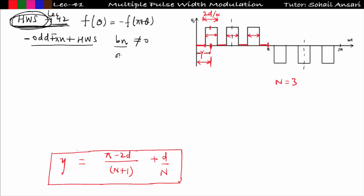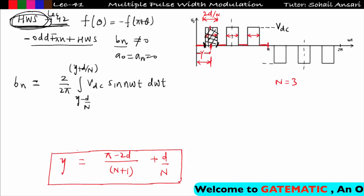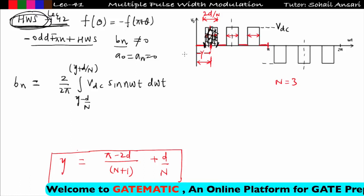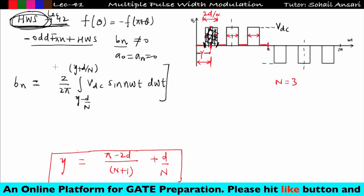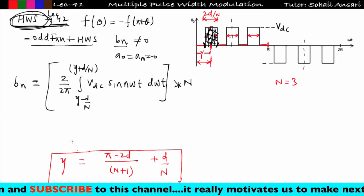This waveform is also an odd function. Odd function plus half-wave symmetry means only bn coefficients exist in the Fourier series; a0 and an equal zero. The value of bn is given by (2/2π) integrated with the peak voltage Vdc times sin(nωt) dωt. For one pulse, the limits are from gamma − d/n to gamma + d/n.